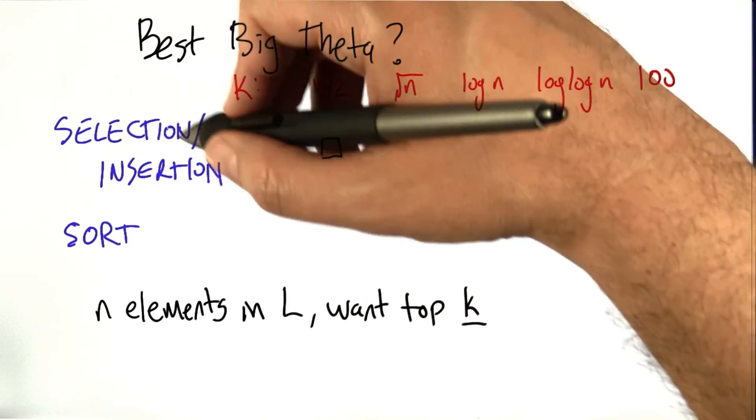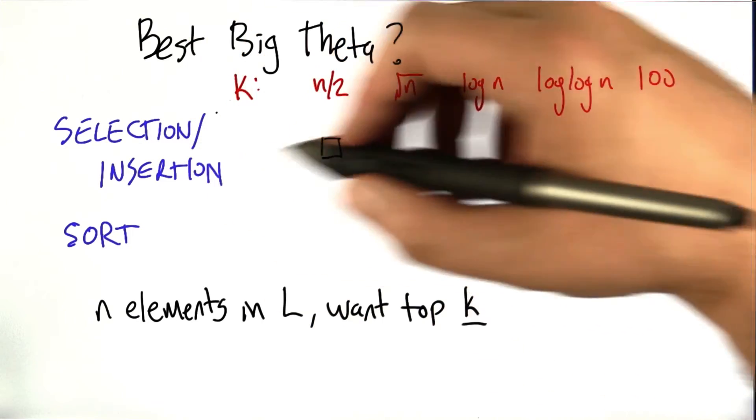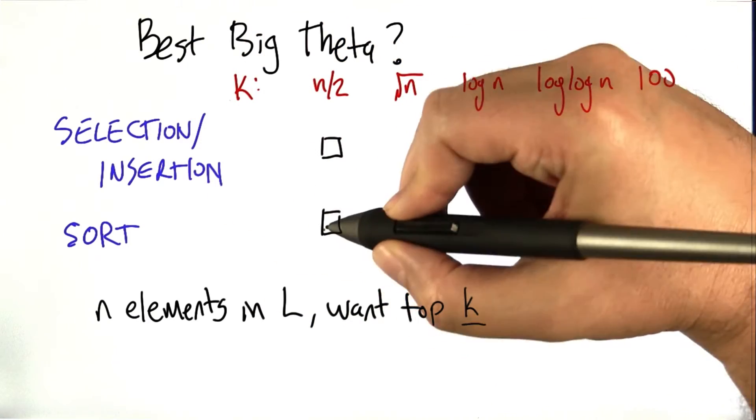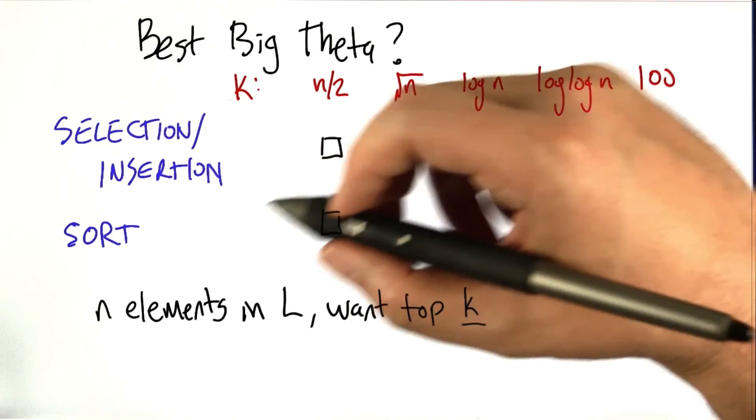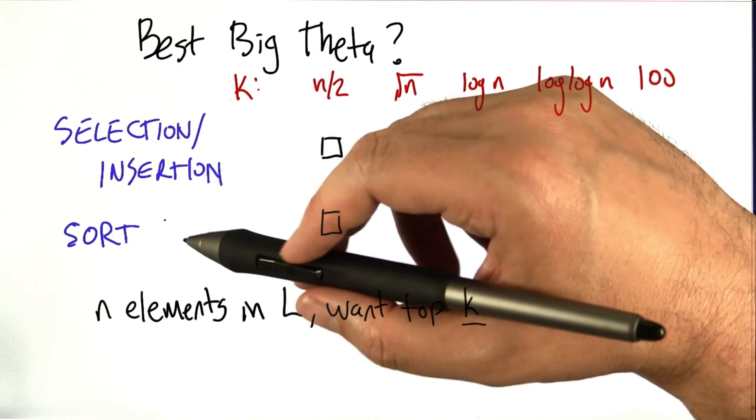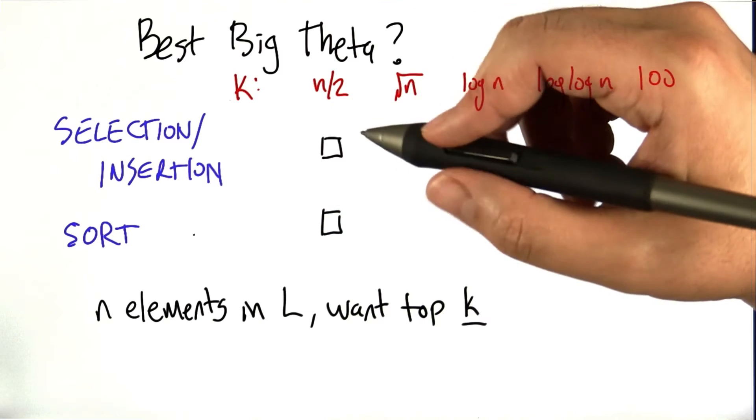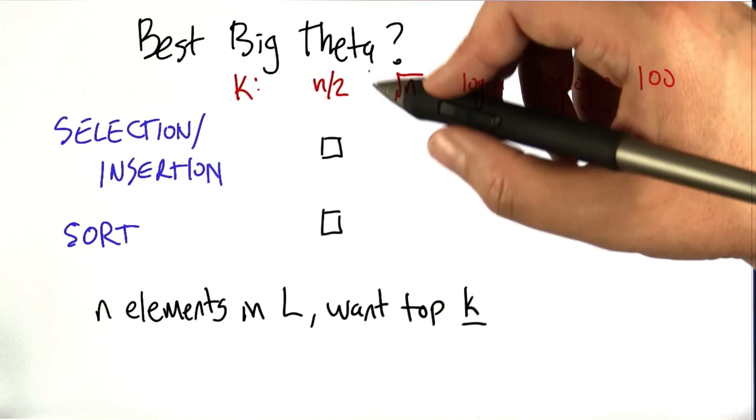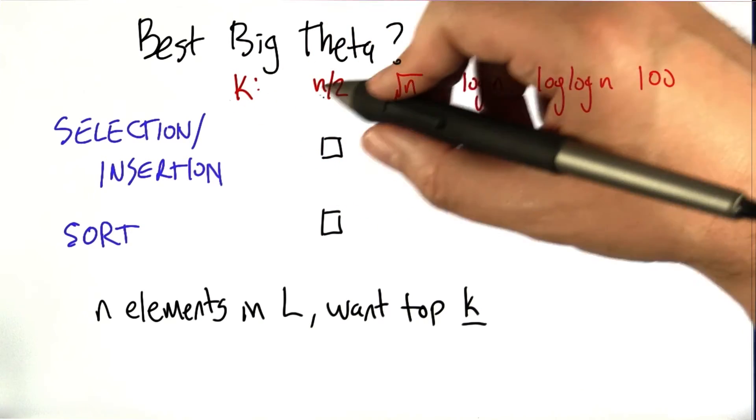The question is, are we better off using selection or insertion? And both of these are going to have the same big theta for all these examples, so I just grouped them together. Or is it better to sort the whole list? Keeping in mind that sorting is a big theta of n log n operation.